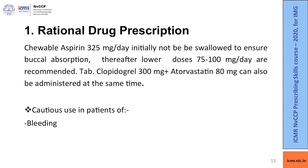The first drug to administer is chewable aspirin 325 mg — it must be chewed, not swallowed, to ensure buccal absorption. Certain guidelines also recommend adding tablet clopidogrel 300 mg and atorvastatin 80 mg along with aspirin. While giving this regimen, any bleeding in the patient should be carefully monitored.